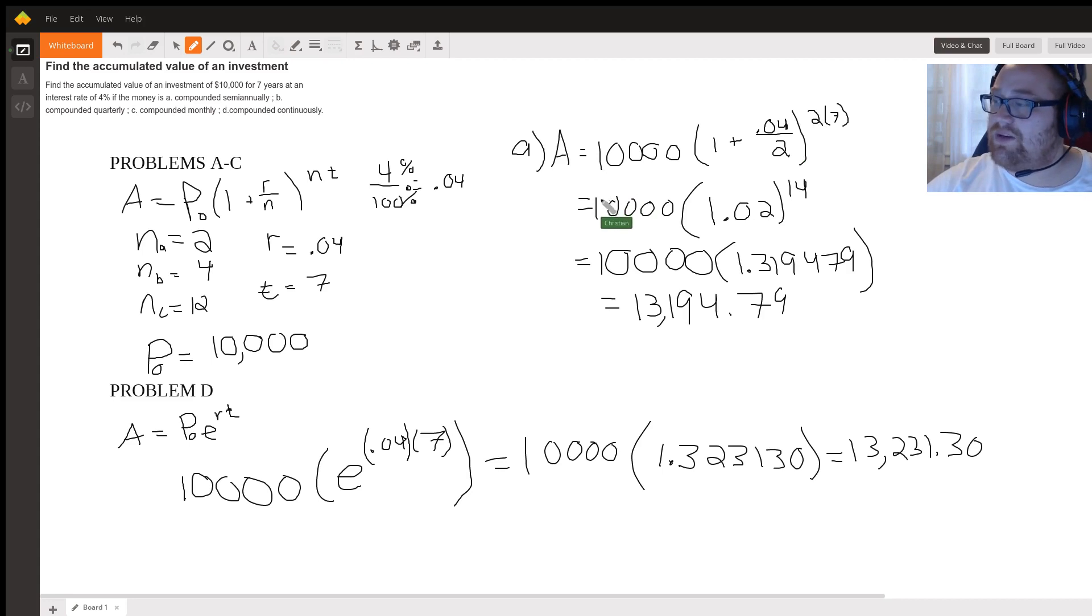So I simplified the equation below. You have 10,000 times 1.02 raised to the 14, because 2 times 7 is 14. 0.04 divided by 2 is 0.02. Under that I just kept simplifying, so I have 10,000 times 1.02 raised to the 14, which ends up being 1.319479.